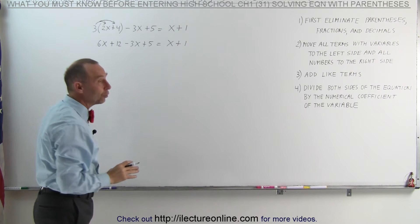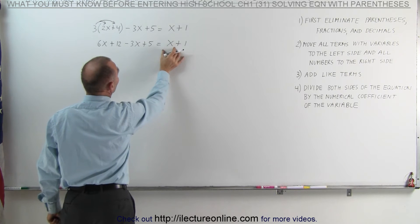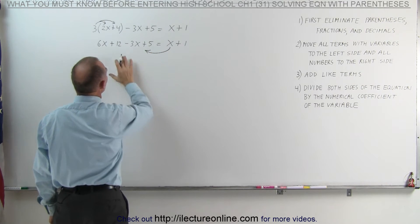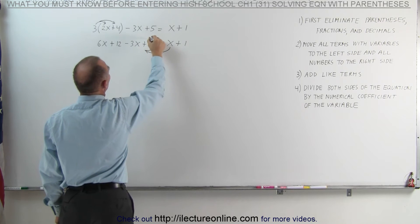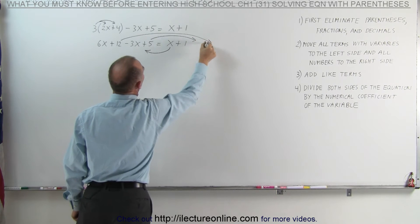The next step, we want to move all the terms that have variables in them to the left side of the equation. We have one of those on the right side, so we want to move the x to the left side of the equation. And we want to move all the numbers from the left side to the right side, which means we want to move the 5 over here, and we want to move the 12 over here.